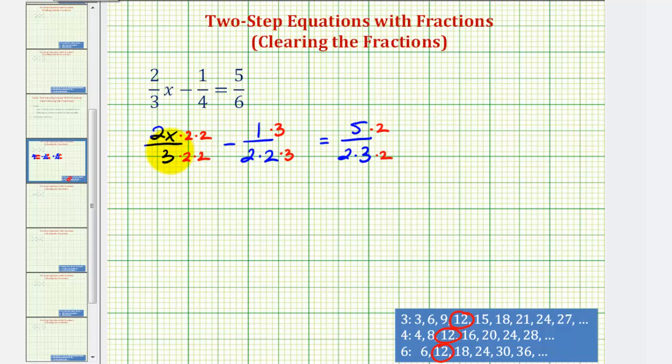Let's go ahead and rewrite this as eight x over twelve minus three twelfths equals ten twelfths. Remember our goal here is to clear the fractions from the equation. So now we're going to multiply each fraction by twelve, or twelve over one. And this will clear the fractions from the equation.